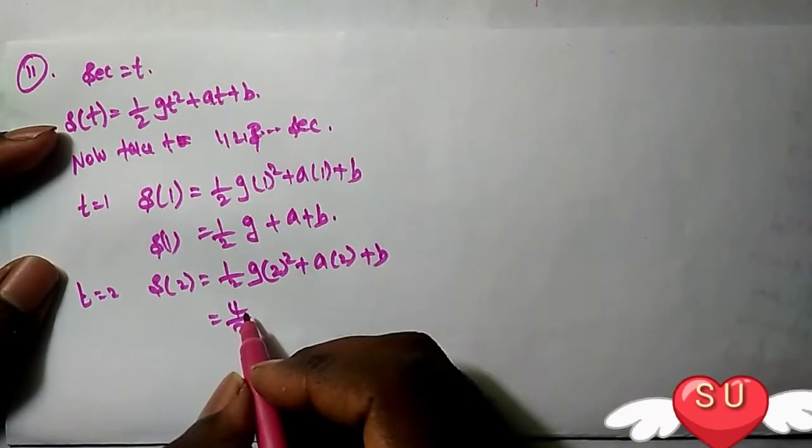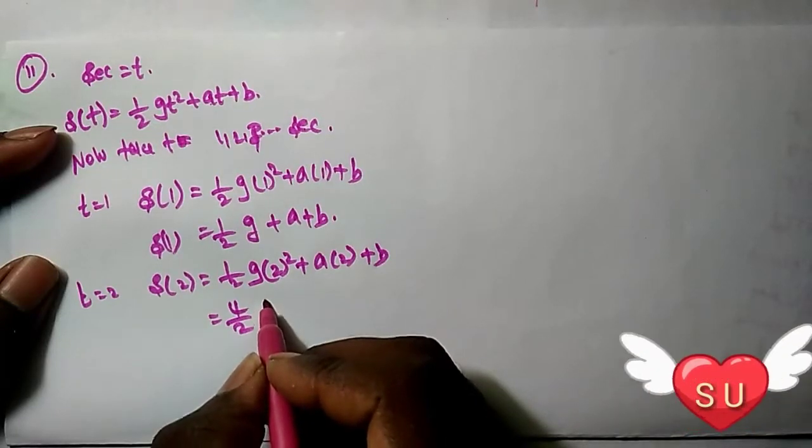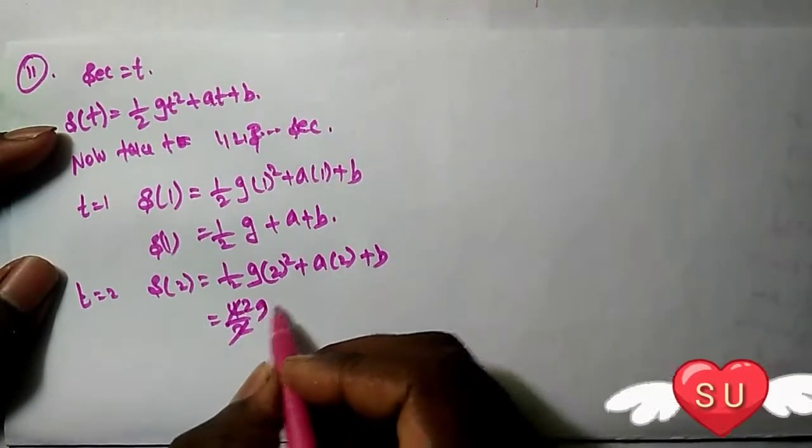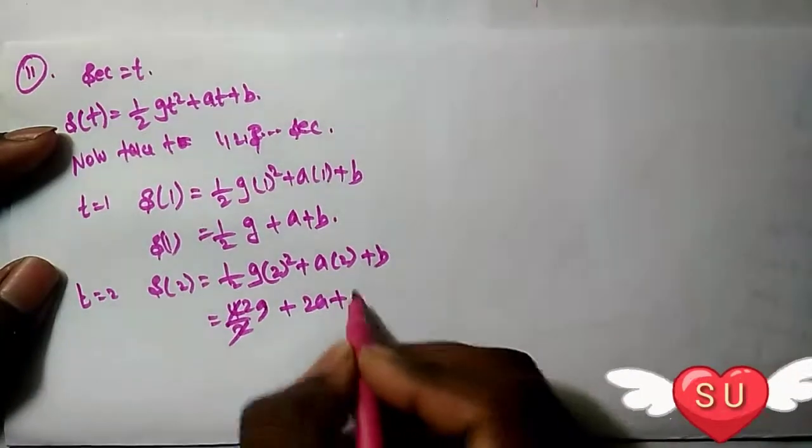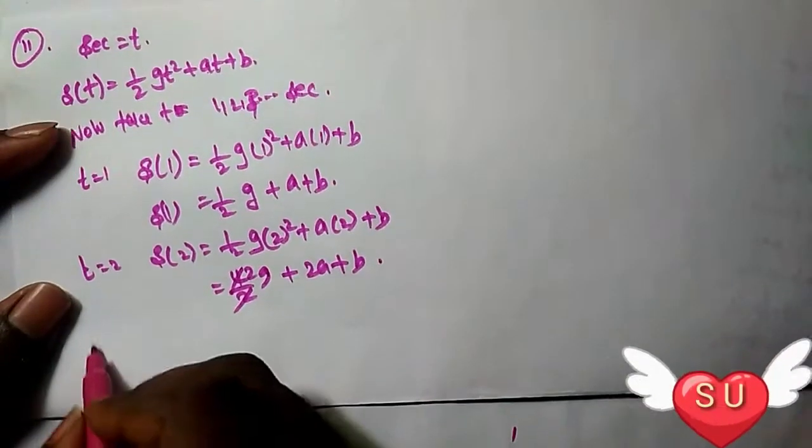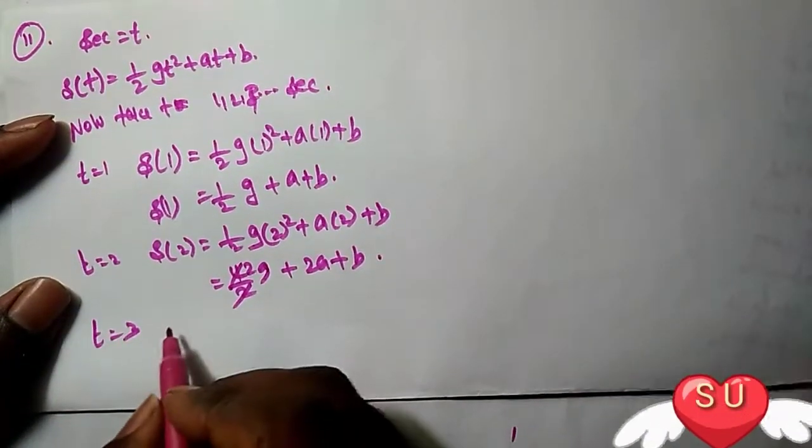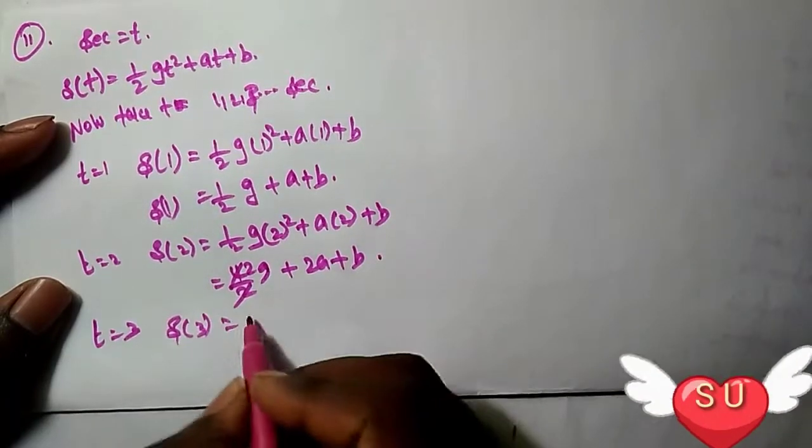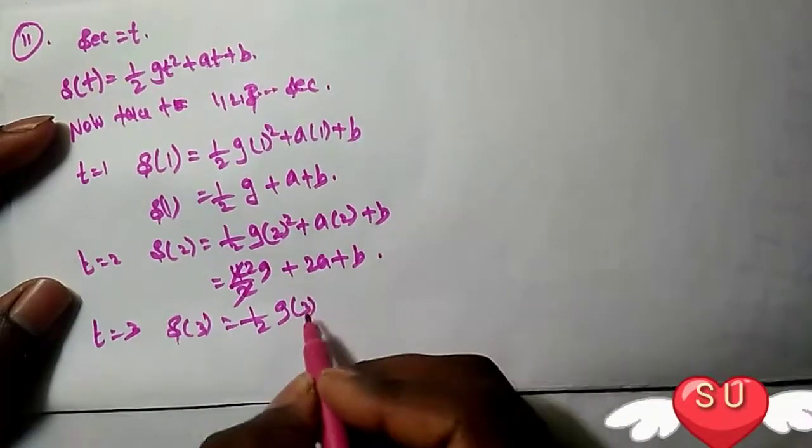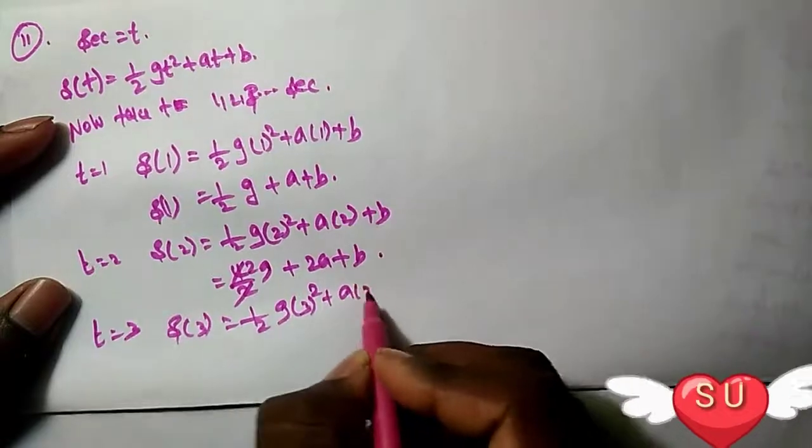For T = 3, S(3) = 1/2 g × 3² + a × 3 + b = 1/2 g × 9 + 3a + b.